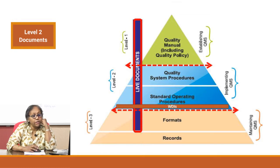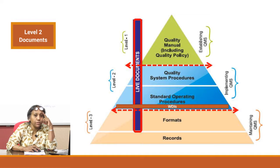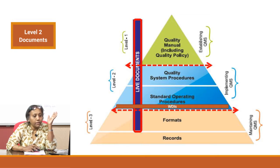Procedure documents are basically quality system procedures and standard operating procedures. If you look at this pyramid, you will see that I have put one more component here — the work desk instructions, which are excerpts from either the quality system procedures or from the standard operating procedures. Technically they are part of the same kind of documentation, only they are smaller, abridged versions for the ease of use of the people doing the work on the front line. These are implementation documents, or level 2 documents — live documents.